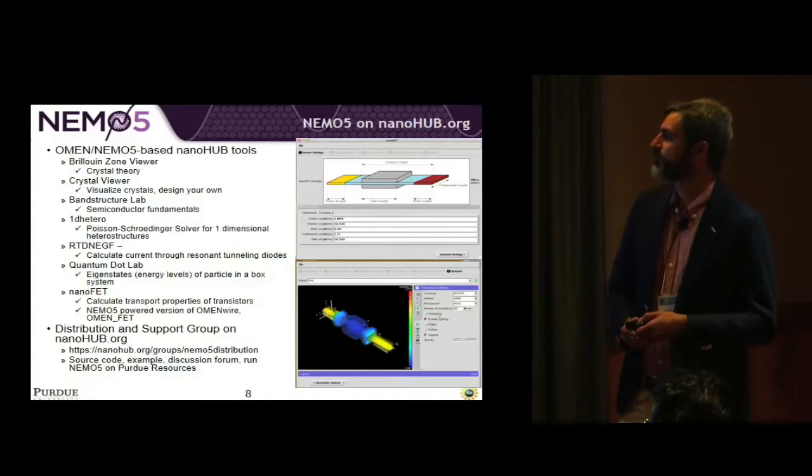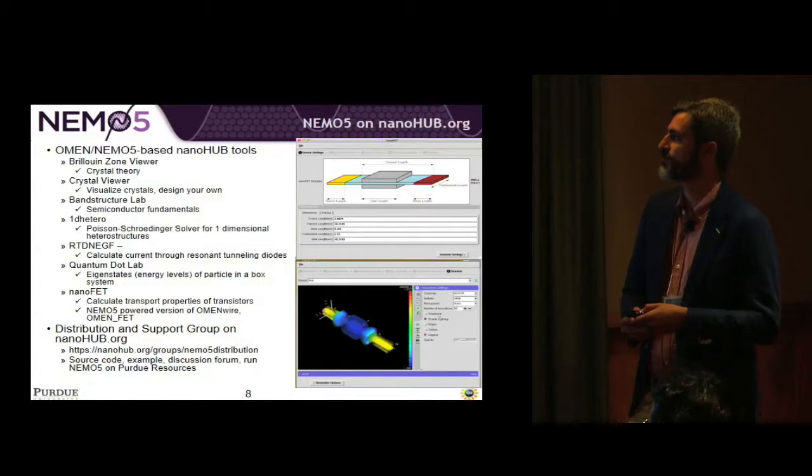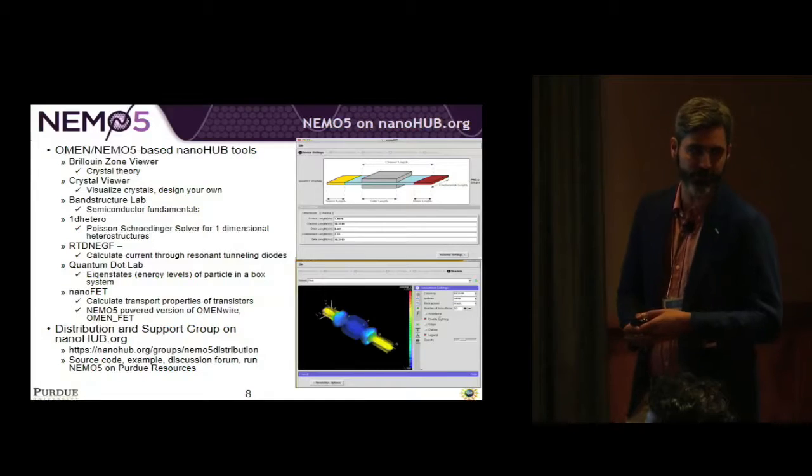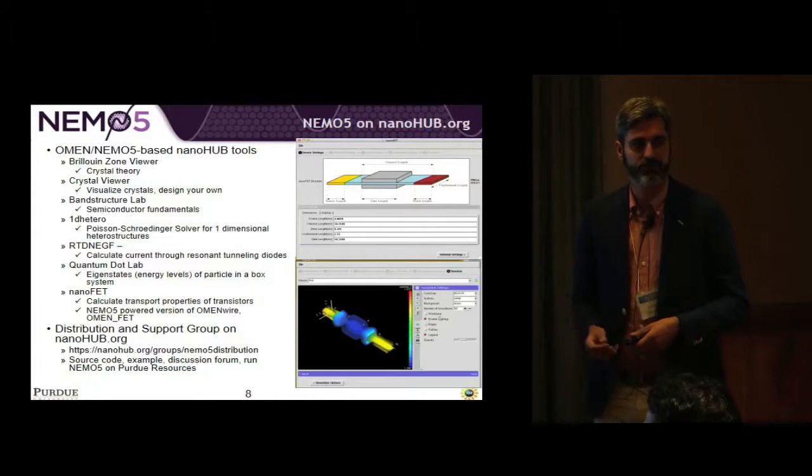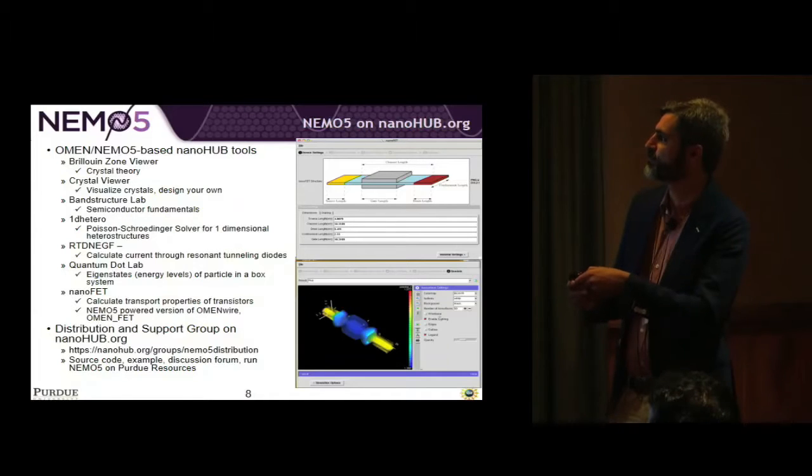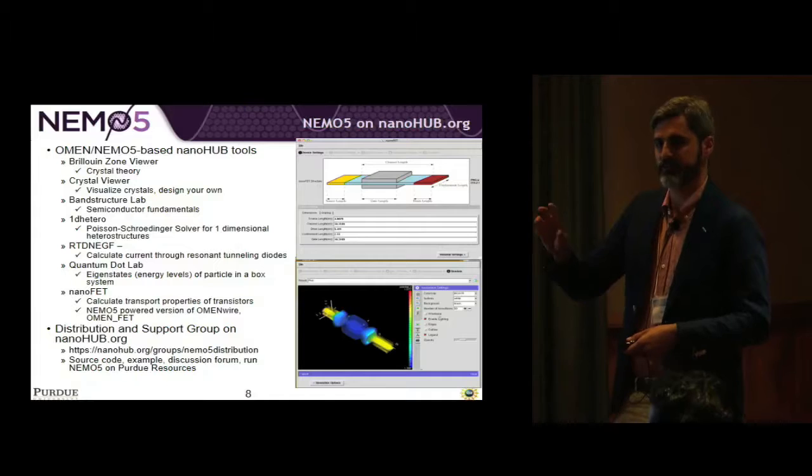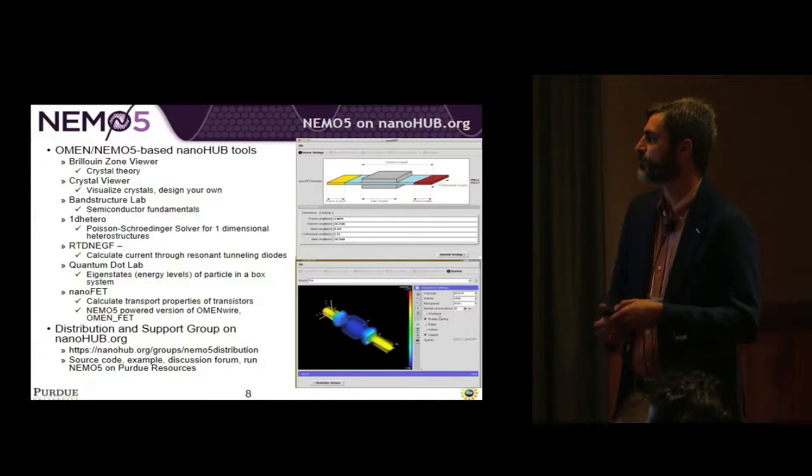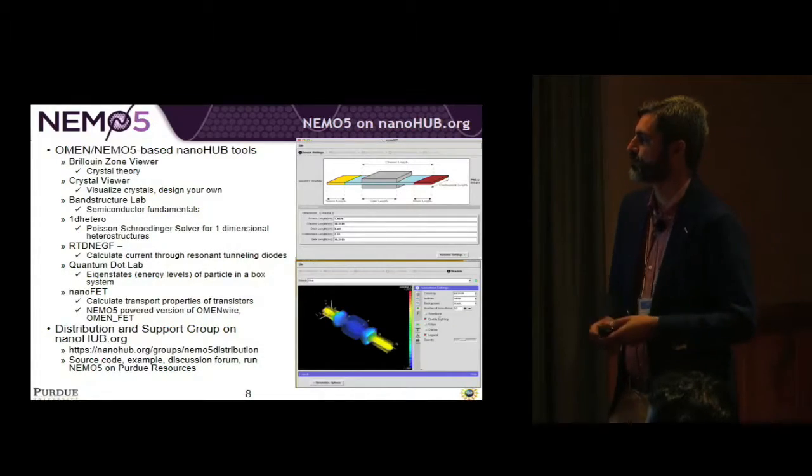So we've got about 10 tools that are based on NEMO 5. Some of them are kind of research, or I guess more of them are probably educational oriented. So you know, brilliant zoom viewer, crystal viewer, band structure lab. These are something that would be geared towards, you know, say sophomore undergraduate students. This is an example of the GUI we have. So you can simplify, say, device design or inputs for the user. It has a lot of nice output features that you can do.